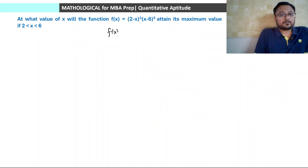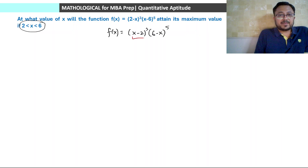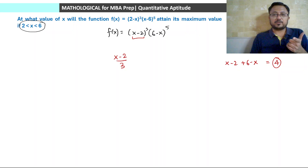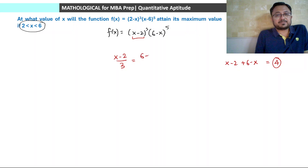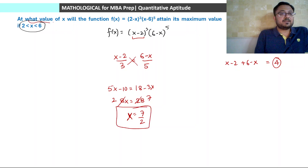Now we find maximum of (x minus 2)³ into (6 minus x)⁵ for 2 less than x less than 6. Note that (x minus 2) plus (6 minus x) equals 4, so the sum is constant. Break x minus 2 into 3 parts and 6 minus x into 5 parts, and set them equal. Cross-multiplying: 5(x minus 2) equals 3(6 minus x), giving 5x minus 10 equals 18 minus 3x, so 8x equals 28, hence x equals 7 by 2.